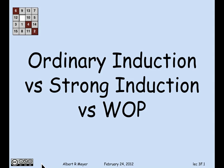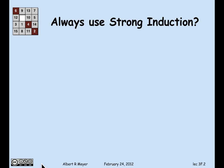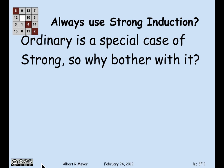Let's look at them one by one. First, it's clear that ordinary induction is a special case of strong induction. In ordinary induction, you're allowed to assume only P(n). In strong induction, you can assume everything from P(0) up to P(n) to prove P(n+1). But you don't have to use all the extra assumptions — you could just use P(n). So any ordinary induction proof is just a special case of strong induction.